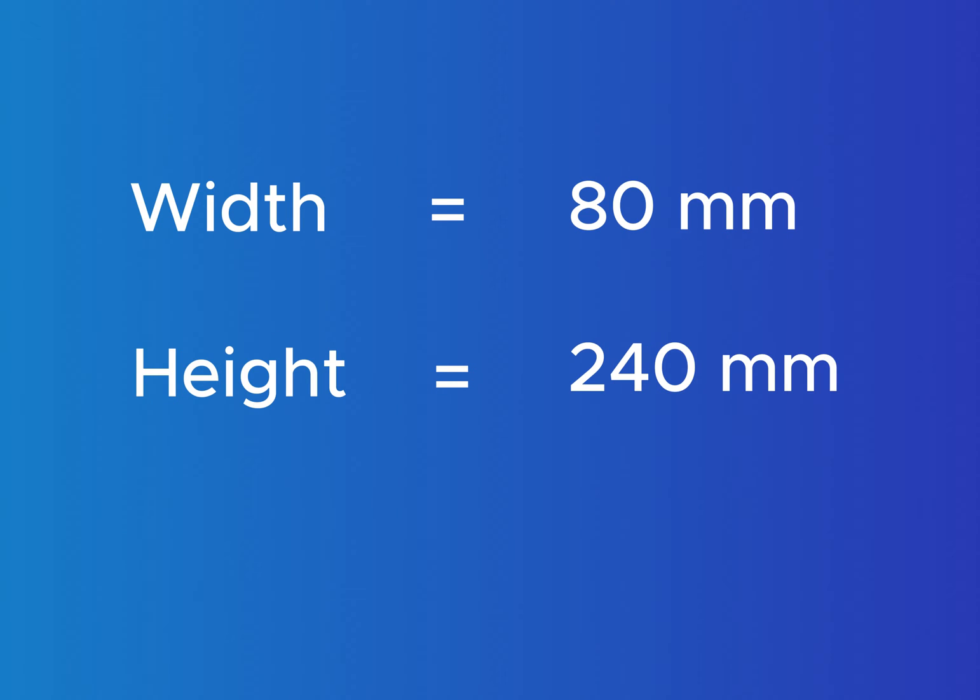Once we know the height and width of the cross section, we can calculate the moment of inertia of the strong axis which is needed to calculate the stress due to bending. We'll calculate the moment of inertia as 9.22 times 10 to the power of 7 millimeters to the power of 4. Now we're all set for the design of the beam.